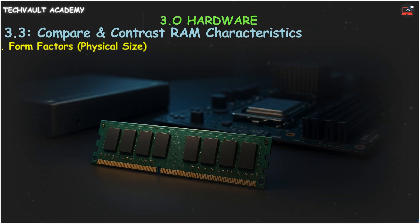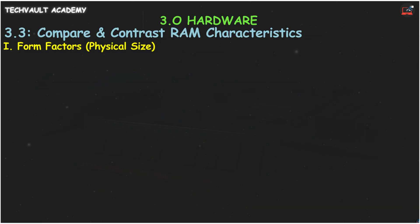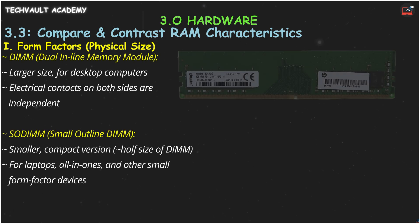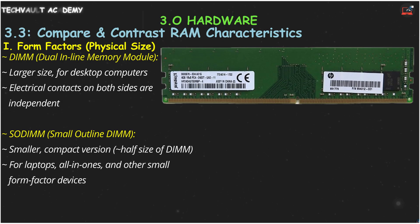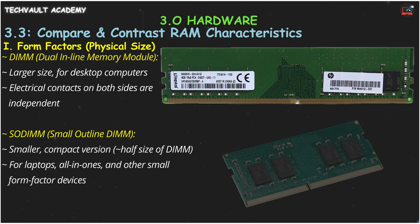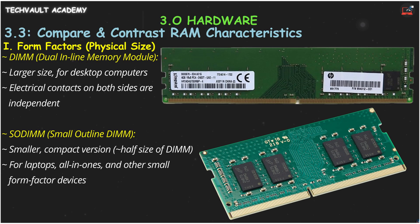Let's start with RAM form factors, which is just the physical size and shape of the memory module. The most common for desktop computers is the DIMM, Dual Inline Memory Module. Dual inline means it has separate electrical contacts on both sides of the module for efficient data transfer. For devices where space is tight, like laptops and many all-in-one PCs, we use a SODIMM, Small Outline DIMM. It's about half the size of a DIMM, but provides the same function, like a compact car for data instead of a full-size truck.